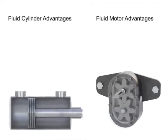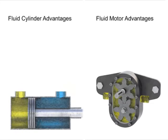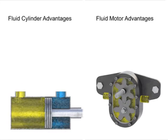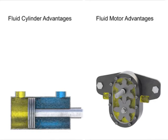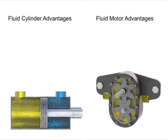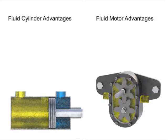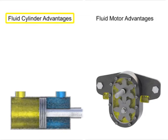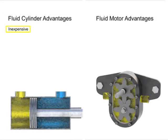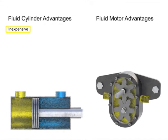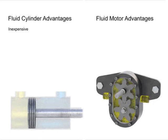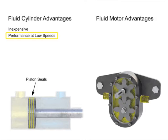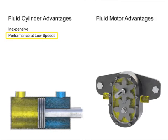Whether to use a cylinder or fluid motor depends upon its application and the type of load to be moved. At first glance, it may seem that cylinders are the better choice. For applications where either can be used, a cylinder is typically less costly compared with a fluid motor of the same horsepower. Cylinders have leak-tight, non-metallic piston seals, which will give consistent performance at very slow speeds against a wide range of load resistance.